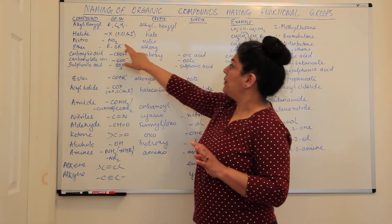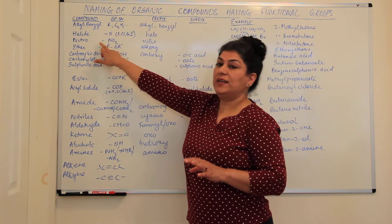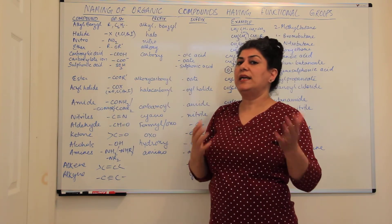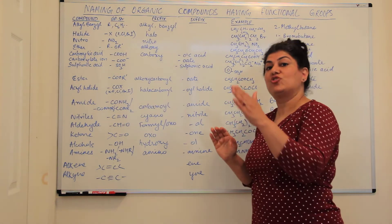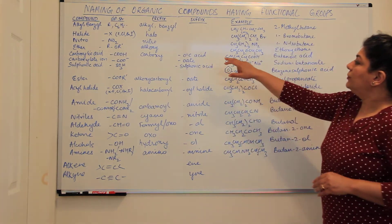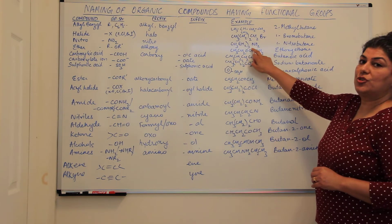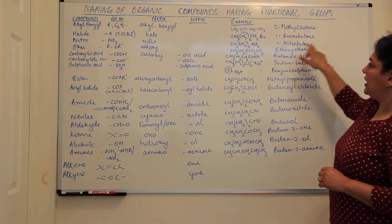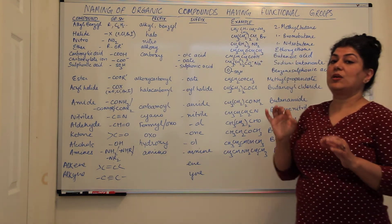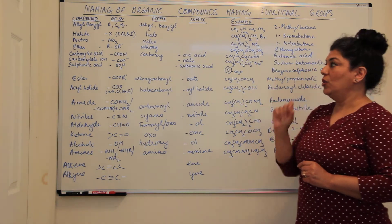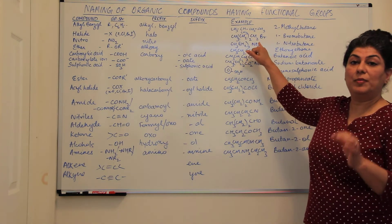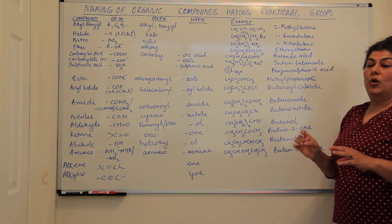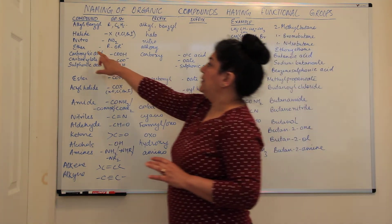The next one is the nitro group. A nitro compound contains NO2. The open end shows that one of the hydrogens of the parent alkane has been replaced by NO2. This NO2 could be at any position. For example, CH3CH2CH2CH2CH2NO2 — counting the carbon atoms, that is four carbons — so it is a butane, and NO2 at carbon one gives 1-nitrobutane.